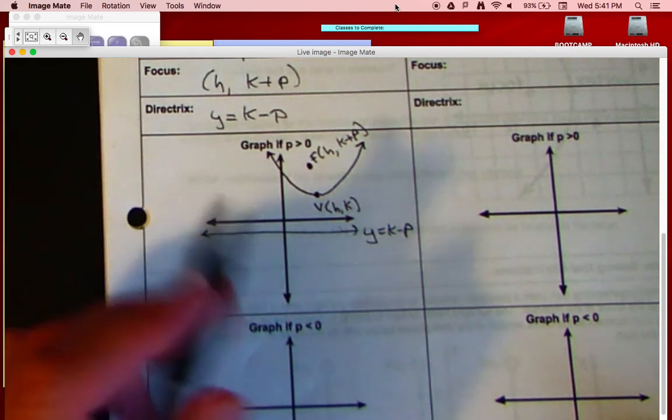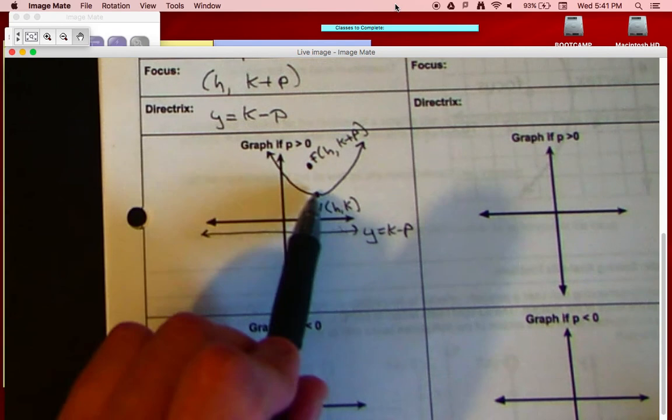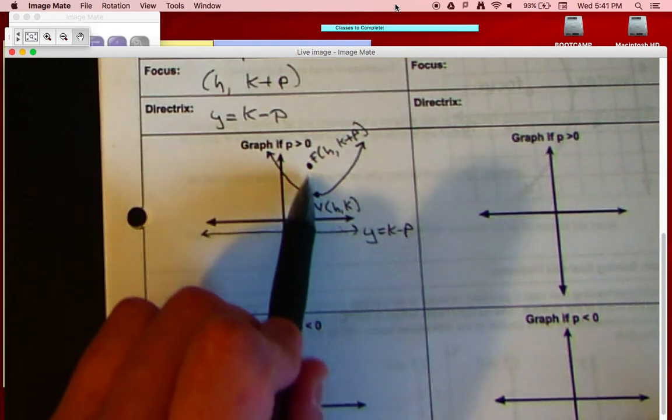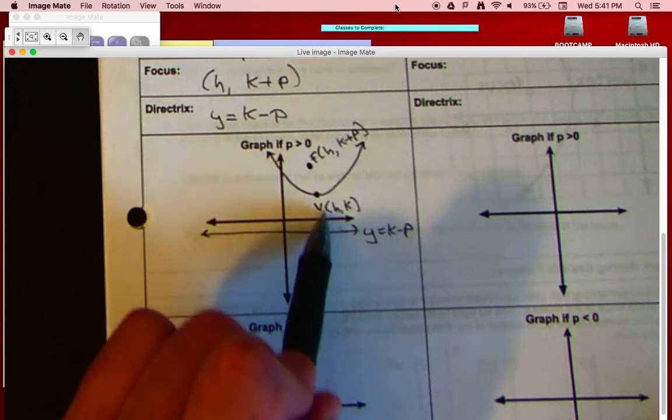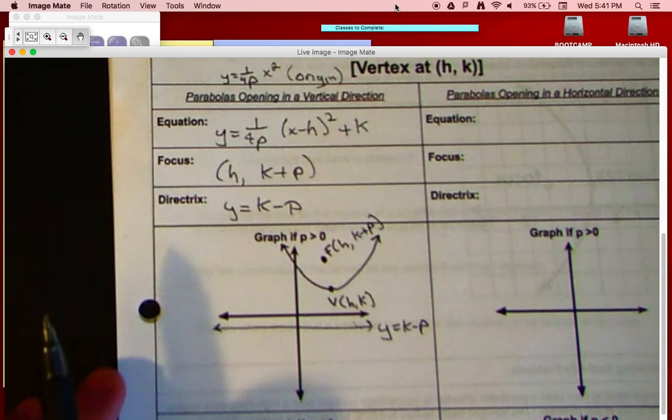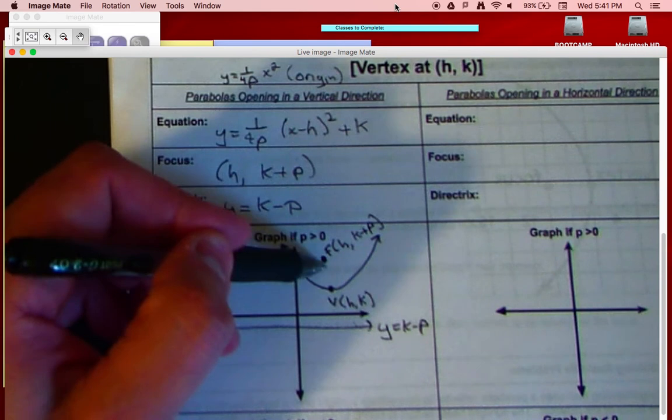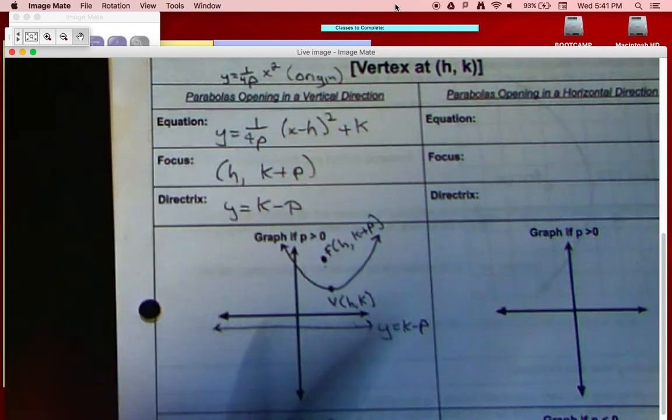The cool thing about all these formulas is if you can figure out the vertex, we know to get the focus that we can count this distance to get the focus, and we can count this distance to get the directrix. So if all these equations seem a little confusing to you, then it's okay. Just kind of keep in mind once we can find our vertex and the p value like we did with the standard form, we can go ahead and just simply count distances to get our focus and our directrix.